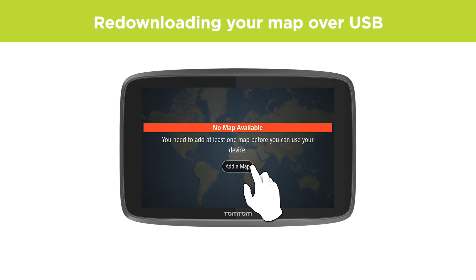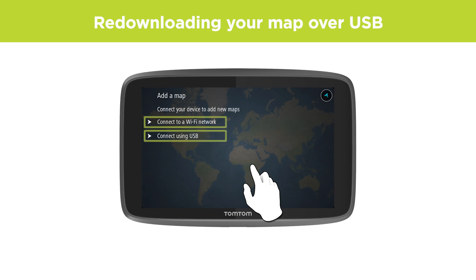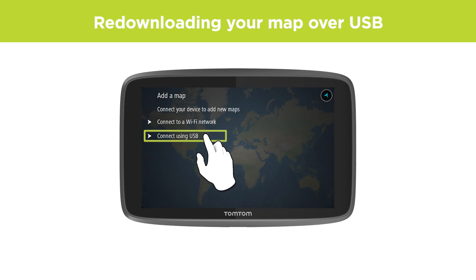If your device is not connected to a Wi-Fi network, you were given two options when you select 'Add a map'. If your previous map installation was interrupted, we recommend you download the map via your computer using USB.